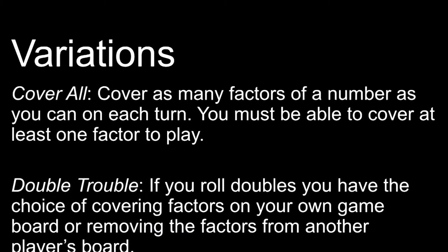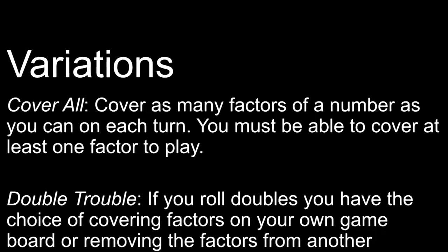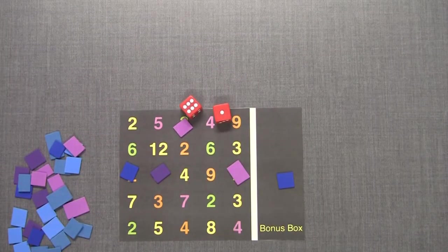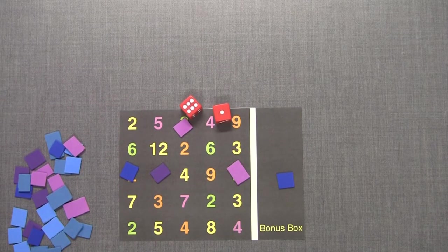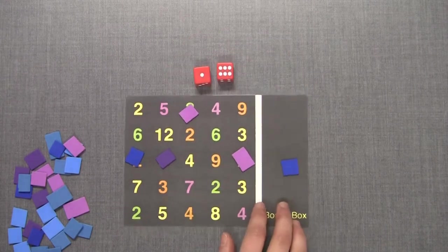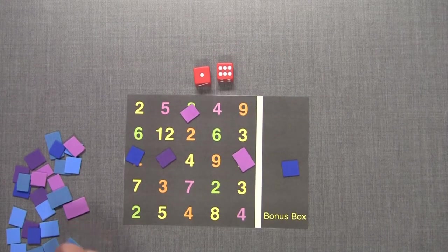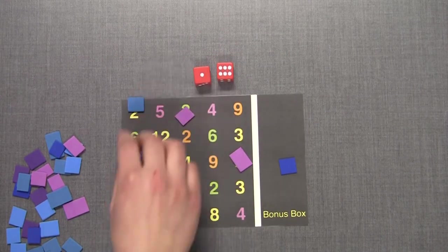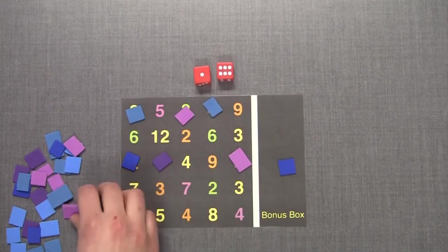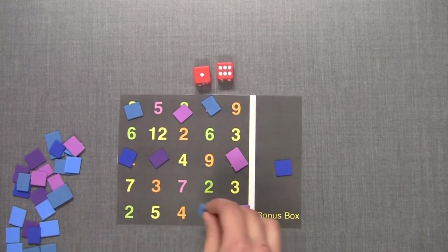There are variations to the game. One variation is cover all. In this variation you can cover as many factors of a number as you can on each turn. You must be able to cover at least one factor to play. If I roll a 6 and a 1 and create the number 16 the factors are 2, 4, 4, and 8.